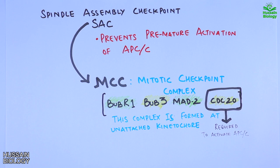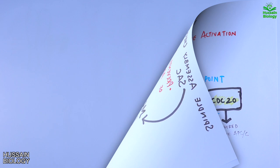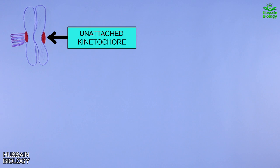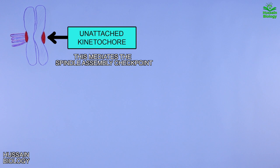The Cdc20 protein is required to activate the APC protein, but the Cdc20 protein remains inhibited in MCC form. In this diagram we have two sister chromatids from the metaphase stage. The red-colored protein is the kinetochore bound to the centromere. On the left we have a spindle attached to the kinetochore, and on the right we have an unattached kinetochore.